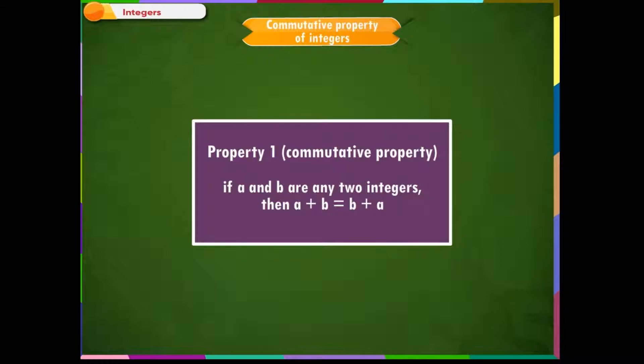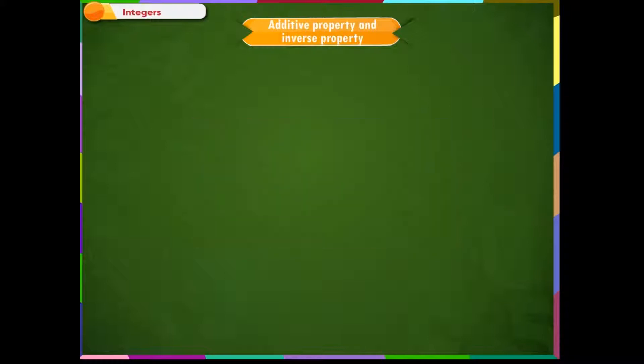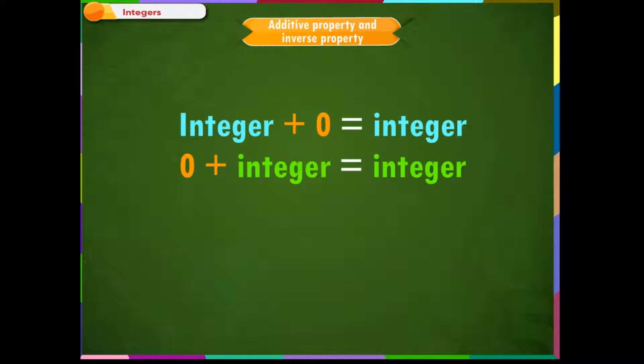The next two properties of integers that are related to addition are Additive Property and Inverse Property. We know that when we add 0 to any integer or any integer to 0, we always get the same integer as a sum. This is called additive property.